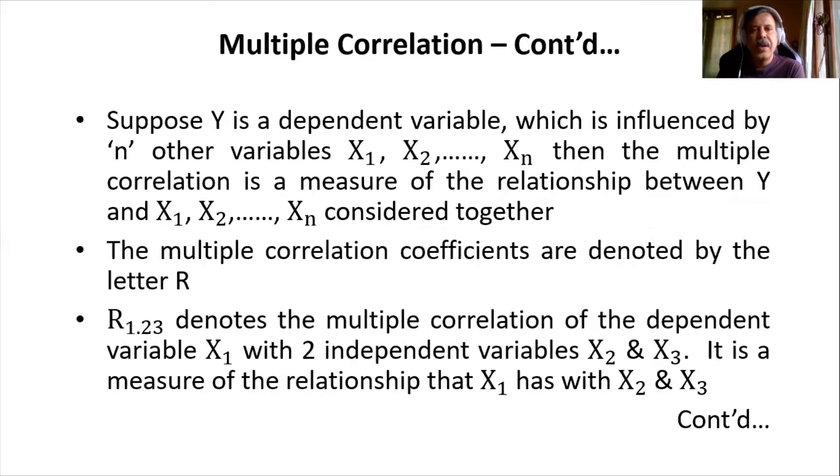Suppose capital Y is a dependent variable which is influenced by, let us say, n variables x1, x2, and so on up to xn. Then the multiple correlation is a measure of the relationship between this dependent variable, which is Y, with the independent variables x1, x2, and so on up to xn, considered together.